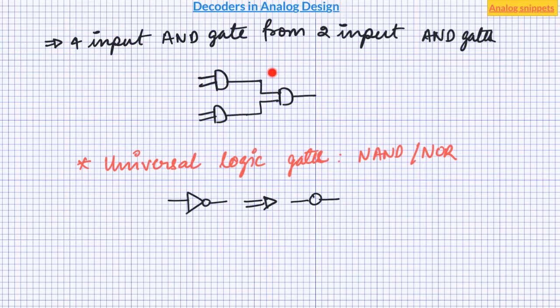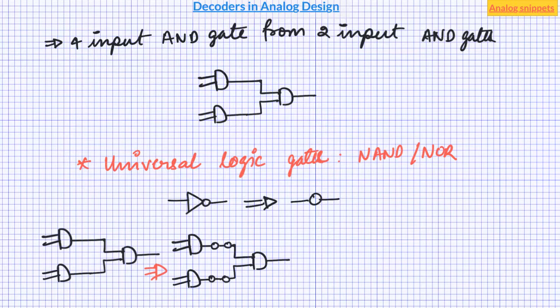Next notice that we can replace any wire by 2 bubbles without changing the overall functionality. Since 2 inverters make a buffer we have simply replaced the AND gate by buffered AND gate. So it doesn't change the overall functionality. Next step is to slide these bubbles backwards and forward so that they touch the logic gates. So after this step first 2 gates are converted into universal gate.